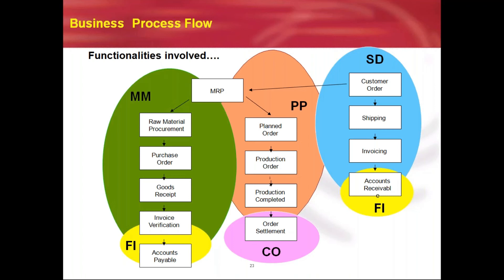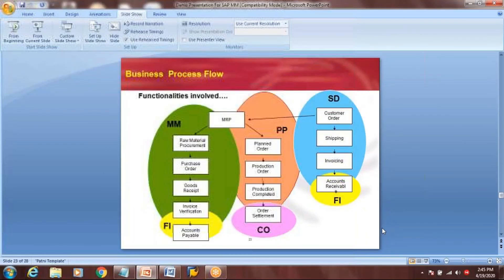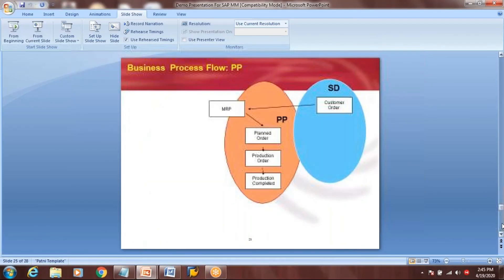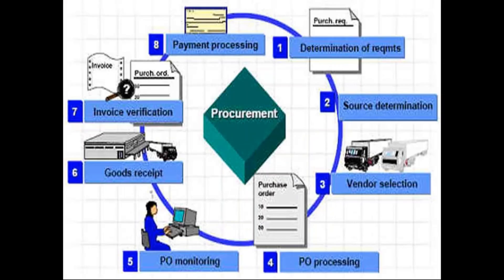So like this, it is integrated to each and every functional module. This is a very important basic fundamental flow diagram. You need to understand what is external procurement, when you go for external procurement, what is internal procurement, and when you go for internal procurement. This is the normal procurement cycle.